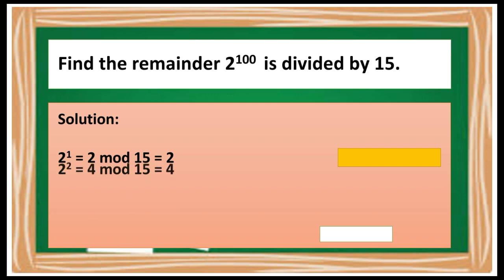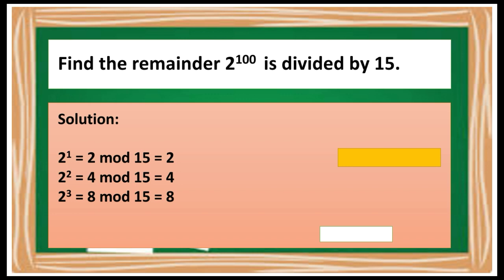Next, 2 raised to 2 is 4, and 4 mod 15 will give you remainder 4. Then 2 raised to 3 is 8, and 8 mod 15 is 8. Lastly, 2 raised to 4 is 16, and 16 mod 15 is 1 because when you divide 16 by 15 you will get a remainder of 1. So from this cycle, we raise 2 by 4 to get the remainder of 1 when you take the modulo of 15. We'll be using this information to solve this problem.